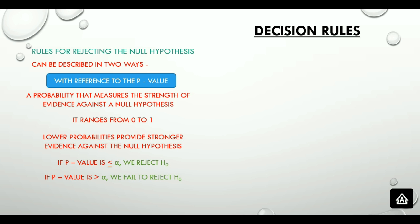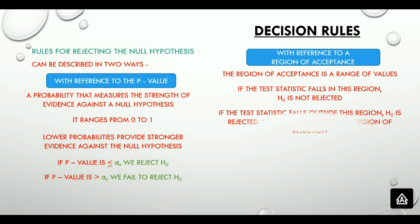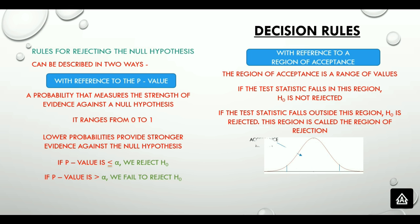The second decision rule is with reference to the region of acceptance, which is a range of values under the normal curve. If the test statistic falls in this region, H0 is not rejected. If the test statistic falls outside this region — that is, in the region of rejection — then H0 is rejected. Looking at a normal curve, the acceptance region is in the center and the region of rejection is on the two tails.